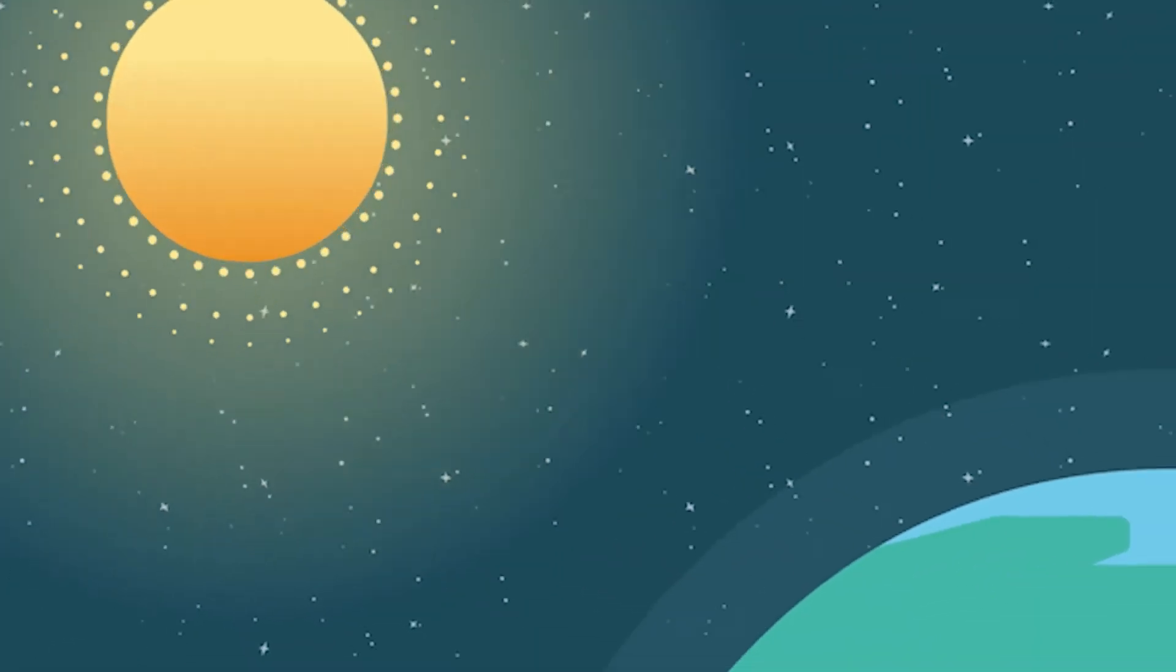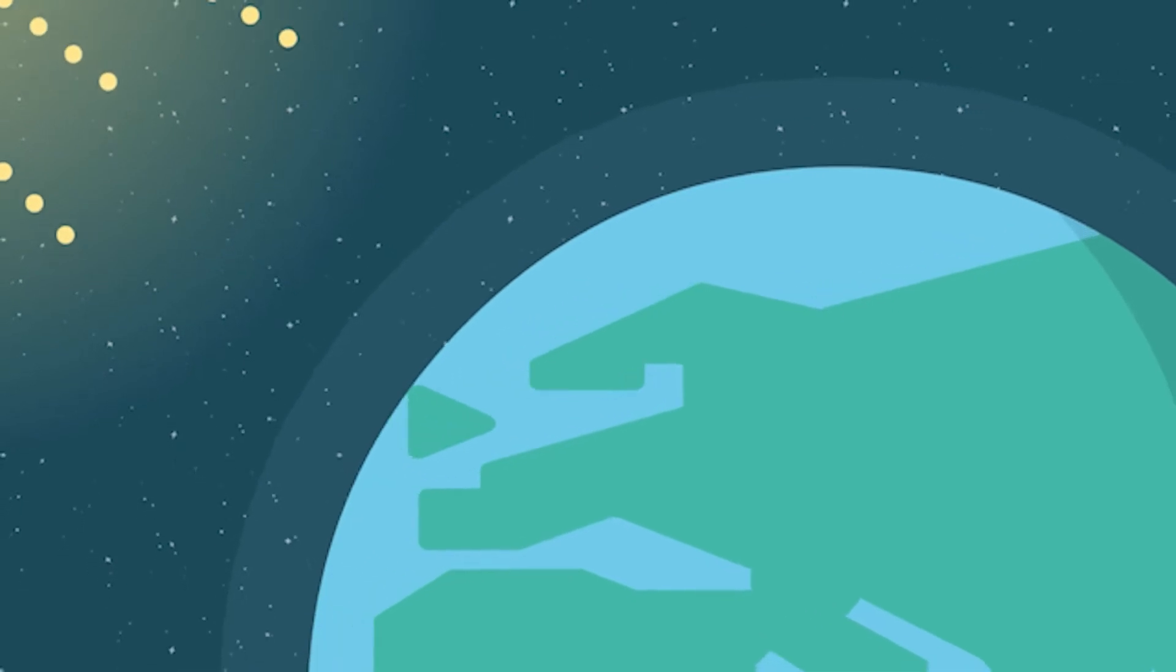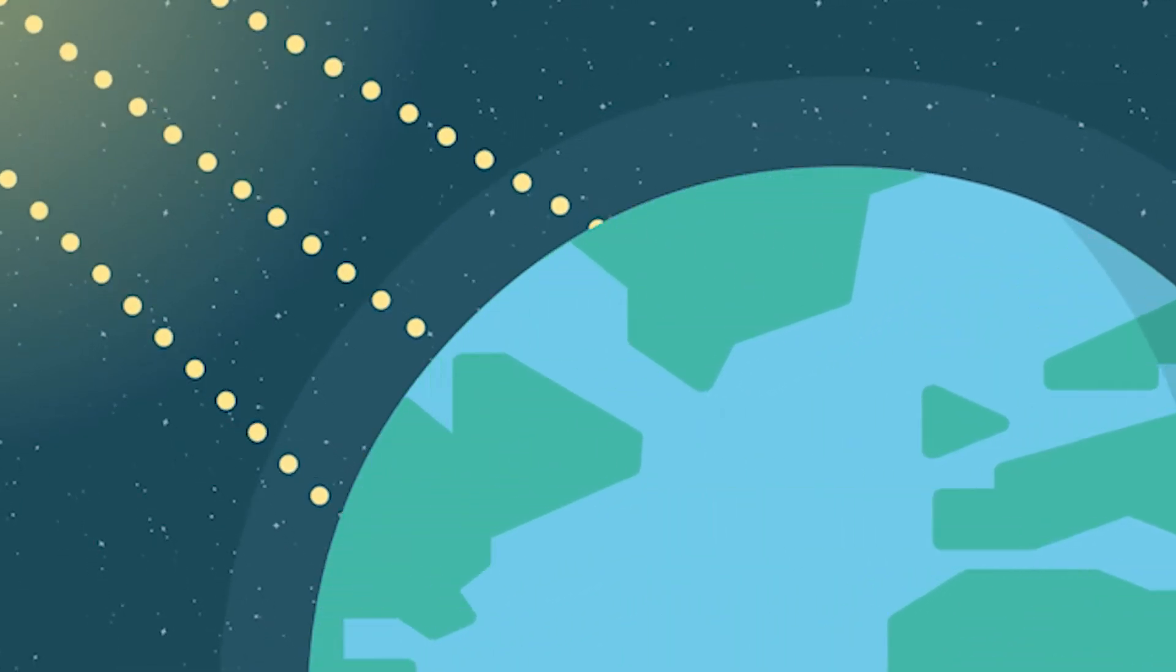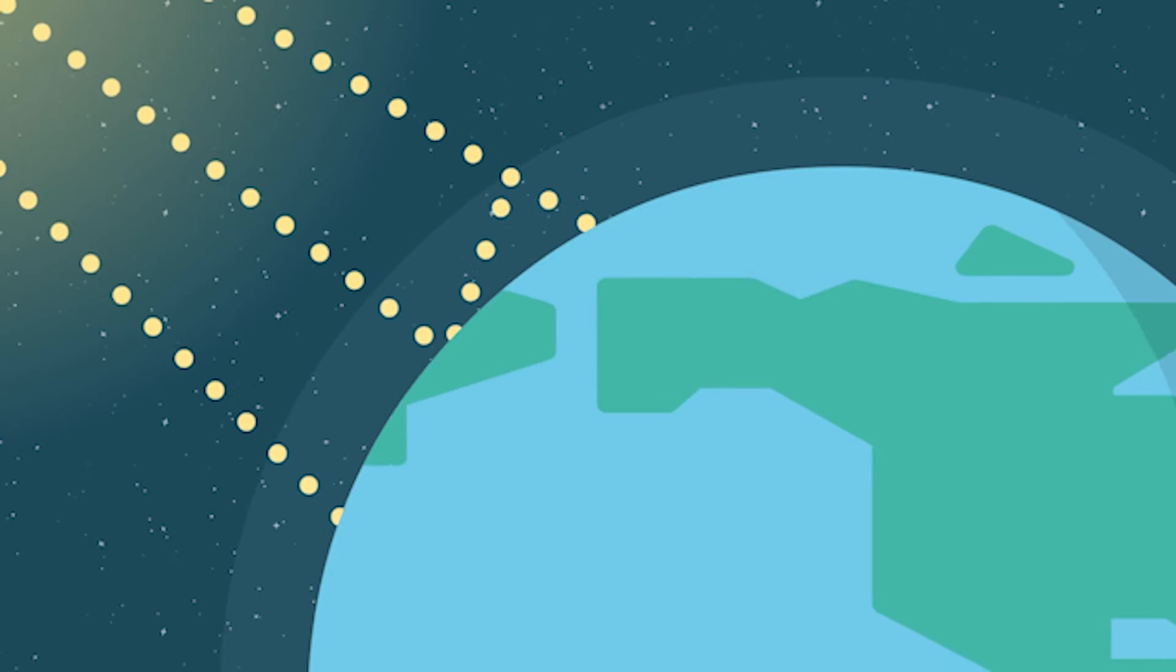The Sun provides the Earth with most of its energy. When sunlight reaches Earth, the Earth will absorb some of its energy and reflect the rest back into space.